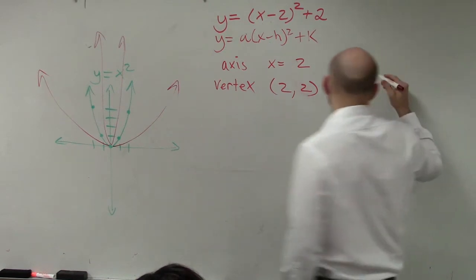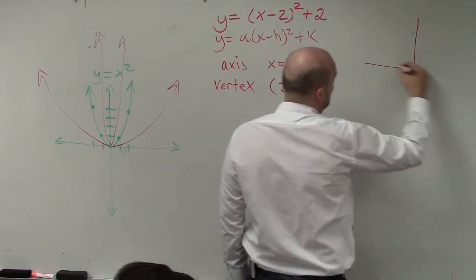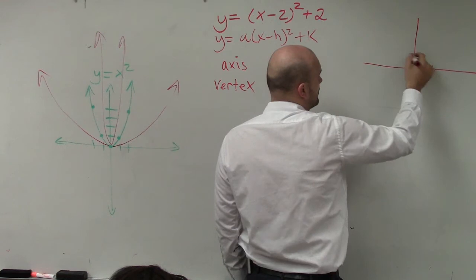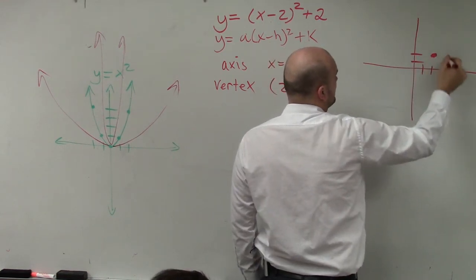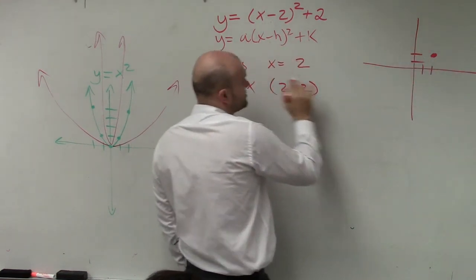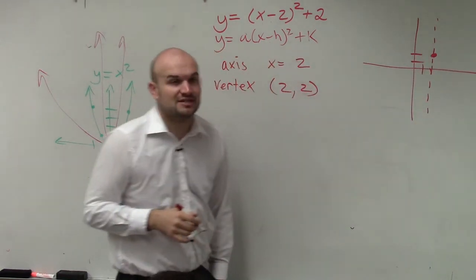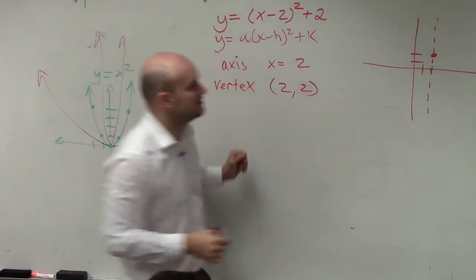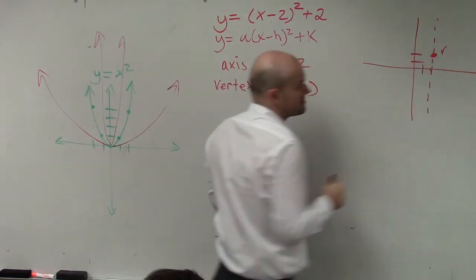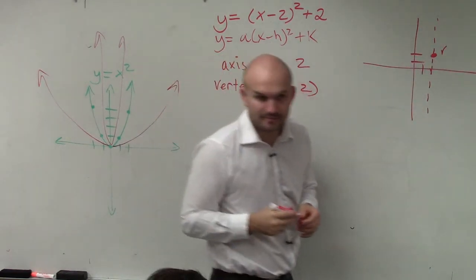So now, to graph this, go over 2, up 2. Also, my axis symmetry is at x equals 2. So I make a nice big dashed line there. And there's my axis symmetry. There's my vertex. That's not that bad, is it? No.